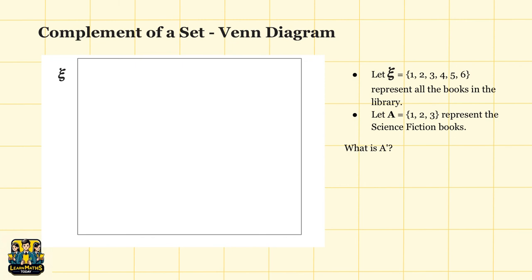Let's move on to some practice questions for the Venn diagram. Imagine you have a universal set, representing all the books in the library: 1, 2, 3, 4, 5, 6. Let A equal to 1, 2, 3, representing the science fiction books. What is the complement of set A? Pause the video and try to tackle this question yourself.